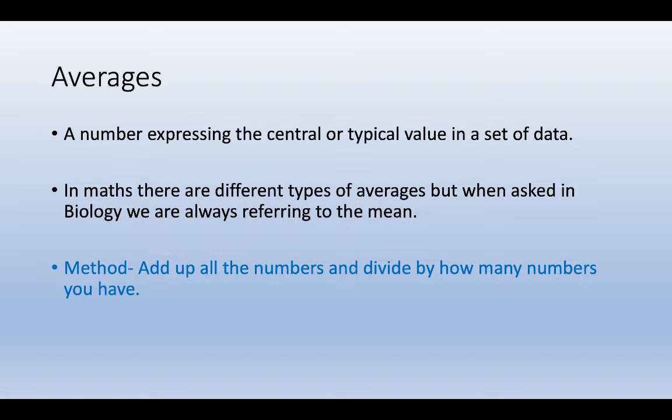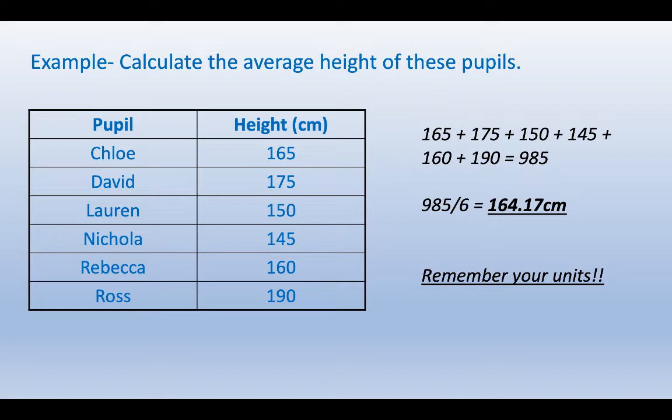An average is a number expressing the central or typical value in a set of data. In maths there are different types of averages, but in biology when we're speaking about an average, we are always referring to the mean. No matter what the question asks, when it's asking you to calculate an average, that's what we're talking about. The method: add up all the numbers and divide by how many numbers you have.